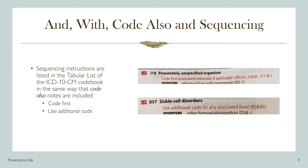Sequencing instructions are listed in the tabular list in the same way that code also notes are included. They are located beneath a section, category, or subsection and give coders more information on how to sequence two or more codes. The first example is code first, which lists conditions that should be coded before the identified code. For example, J18, pneumonia, unspecified organism, instructs the coder to code first associated influenza, if applicable. If the patient had both pneumonia due to unspecified organism and influenza, the coder would sequence the influenza code first — such as J11.00 for influenza — and then J18.9 for the pneumonia.